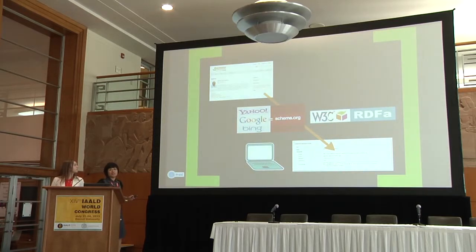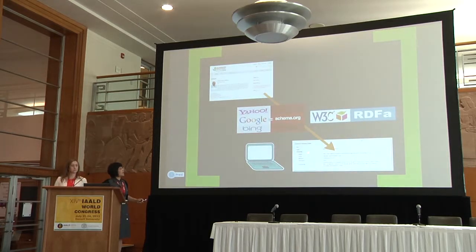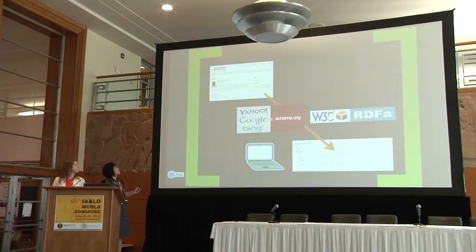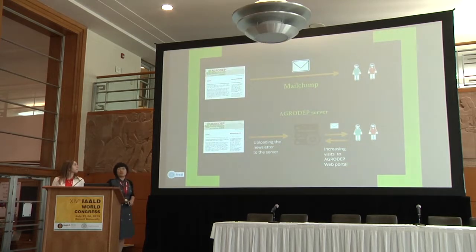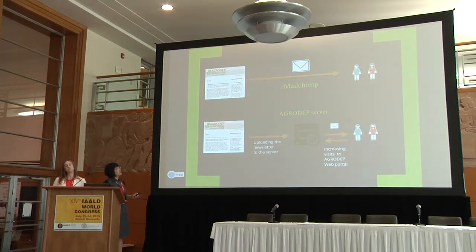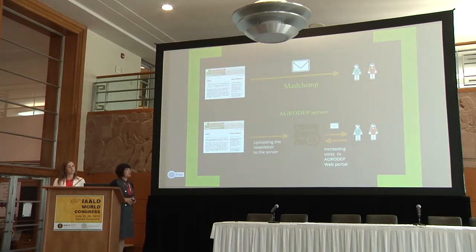We are also doing Schema.org implementation on the website. You can see the human-readable version of the user profile, but there is also a machine-readable version where we add Schema.org vocabulary so machines can understand — this is a photo, this is a first name, last name, where this person is from, and a biography description. For the newsletter, we do the mailing first. We realized that feedback from users was not incorporating into our web traffic, so we did a simple experiment to increase traffic back to the website.